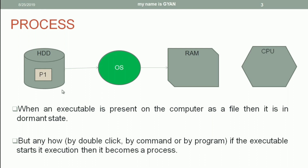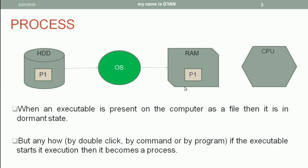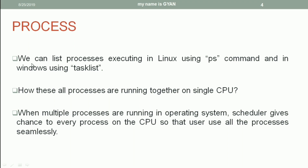When an executable file is present on the computer as a file, it is in the dormant state — means inactive state. But if you double-click on it or execute it via the command prompt or terminal, the operating system picks this executable file, loads it into RAM, and it becomes a process. After that, the operating system schedules this process to the CPU for execution. How many processes are running in your system can be listed using the ps command in Linux or the tasklist command in Windows.